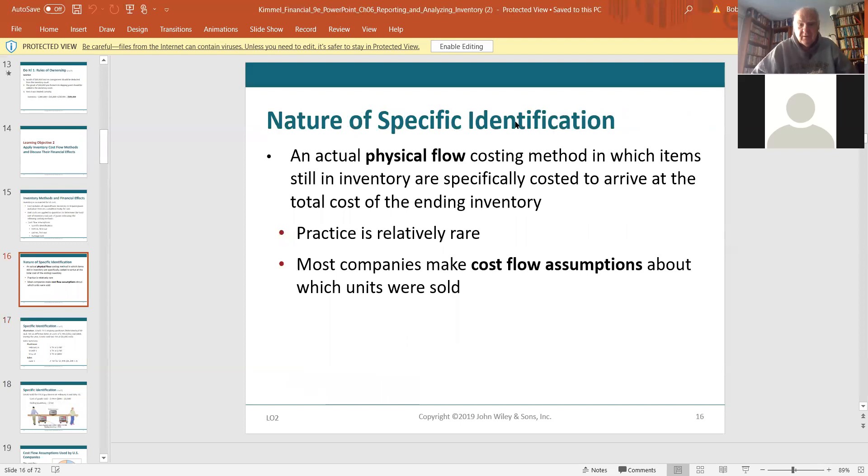Specific ID. An actual physical flow costing method in which items are specifically costed to arrive at the total cost of the inventory. Very rarely used. Most companies make assumptions about which units are sold. So specific ID, Liba, that's the only method that matches the physical movement of the goods. You know who uses specific ID? An auto dealership. When I bought my Ford, my Ford Edge, about eight years ago, I went in there and I said, I'll take that car right there. I'll buy that model. Well, I gave the guy my check. Did he say, okay, go out into the parking lot, take whatever Ford Edge you want, drive it home? No.